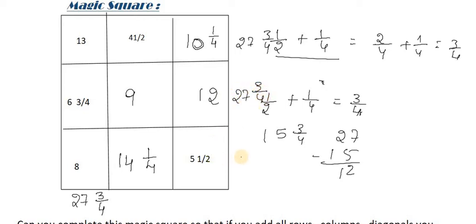And 14, 5 plus 8, 13 plus 14 is 27 and 3/4. Now we will go for columns. One is already done for us. 14 plus 4 is 18, 18 plus 9 is 27 and 3/4. 12 plus 10 is 22, 22 plus 5 is 27 and 3/4.